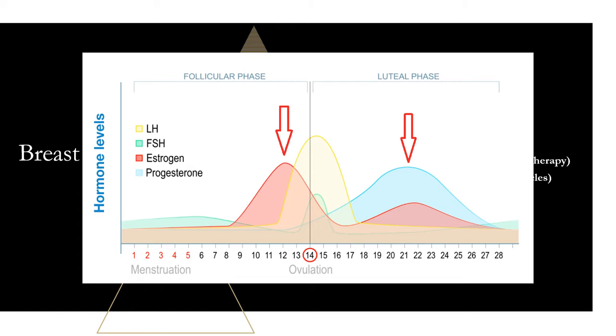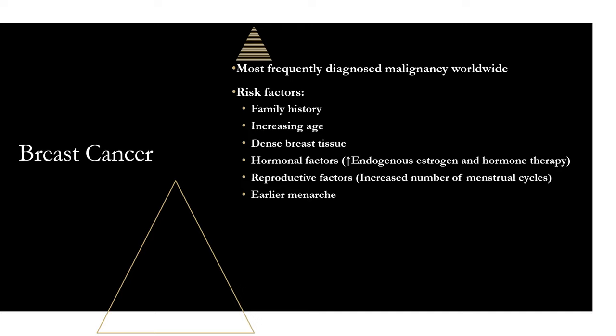What leads to more menstrual cycles? One is early menarche — the earlier a woman starts menstruating, the higher the risk of breast cancer. One study found that for every one-year delay in the onset of menarche, breast cancer risk was reduced by 5%. At the opposite end, late menopause is associated with higher risk: more menstrual cycles due to later menopause means higher lifetime exposure to estrogen and progesterone, and therefore higher risk.